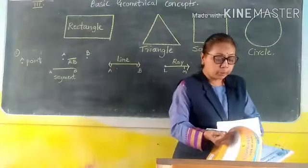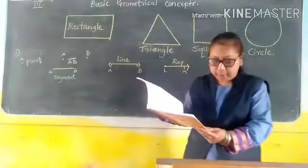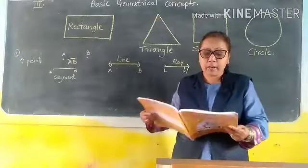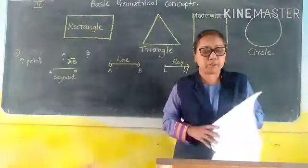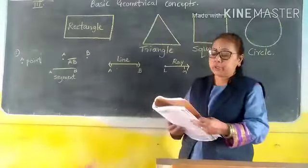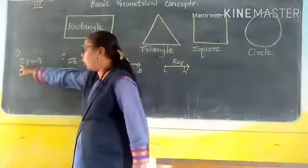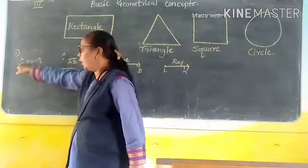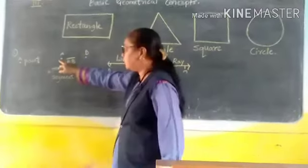Now, come to page number 88. Now, there are some geometrical concepts. So, we will go to that. What is the first one? Point. What is the point here? Point is a dot and it is named as A.